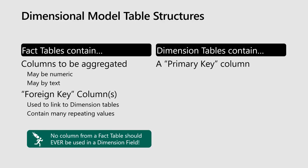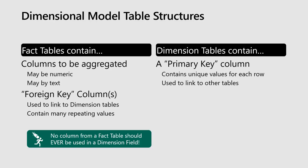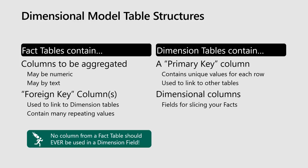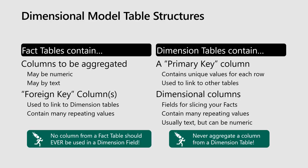What does a dimensional table need to look like? It contains a primary key column — a unique identifier like customer ID. We would never have multiple customer IDs in a customers table because the whole point is to have a unique list of every customer. These contain unique values for every single row. The other kind of columns are what we call dimensional columns — the columns we actually use to slice things. A customer table might have many first names where the first name is John, or many people who live in Georgia. These are the fields we use to slice the facts. Most of the time these are text, but not always.